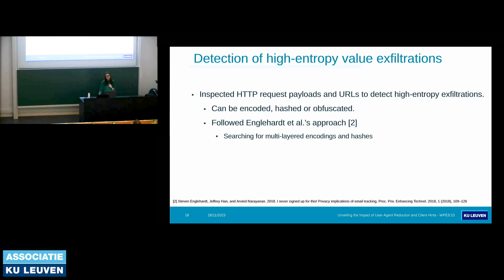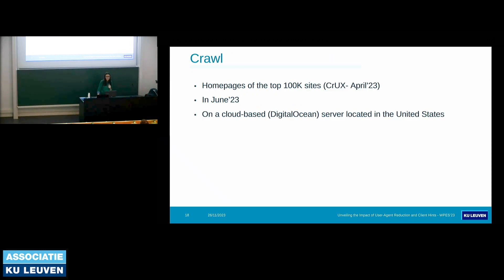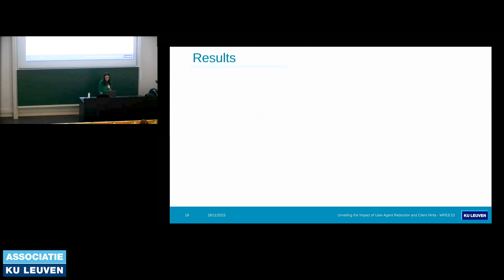For the detection of user agent client hint exfiltrations to third parties, we didn't only check plain text versions. We also checked hashed and encoded versions in request URLs and payloads. To achieve this, we followed a method from a previous study that searches for multi-layer encodings and hashes. For labeling tracking-related requests, we used uBlock Origin's NPM module, which already contains several block lists such as EasyList and EasyPrivacy. In June, we crawled the top 100k web pages on a cloud-based machine located in the United States, chosen because there are fewer cookie consent dialogues there.